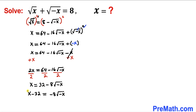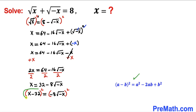Now let me go ahead and take the square on both sides of this equation. We are going to recall the identity a minus b whole squared and apply it on the left hand side binomial. And since we are running out of space on the left hand side, let me go ahead and proceed on the right hand side.